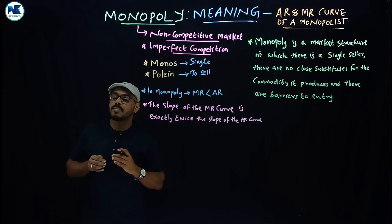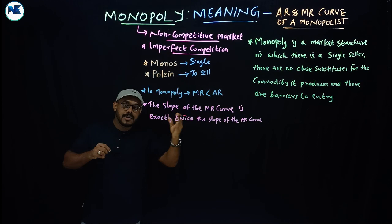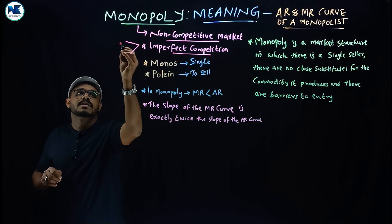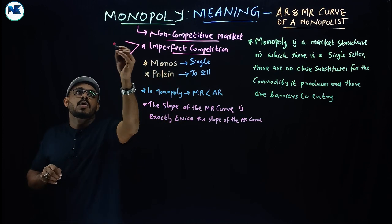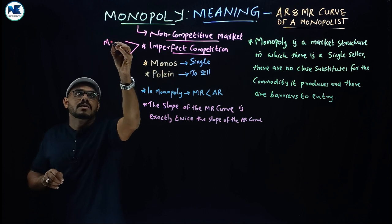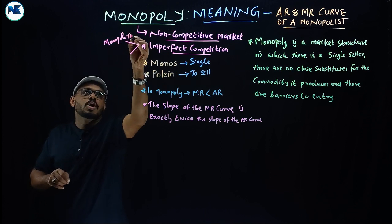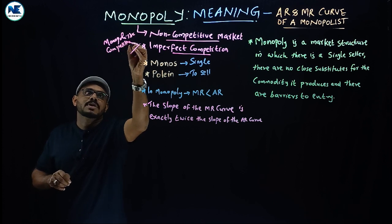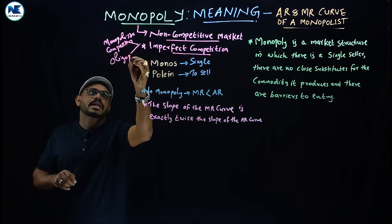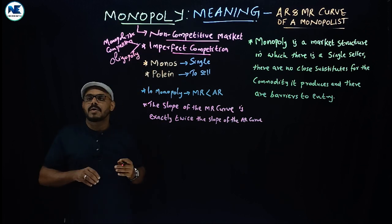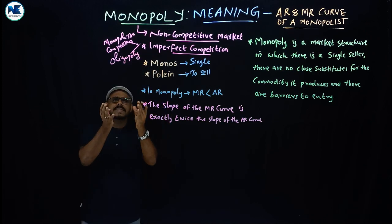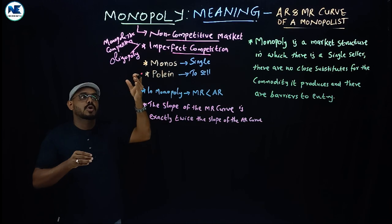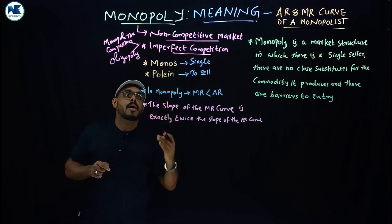You can expect a two-mark question here, or you can add this topic in the introduction part. Imperfect competition includes markets like monopolistic competition and oligopoly, which actually come under imperfect competition. Monopoly is also a little bit of imperfect competition, but there is no competition there — that is why monopoly comes under the non-competitive market.